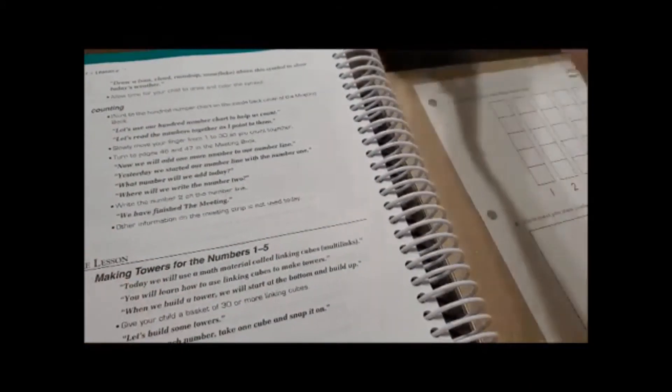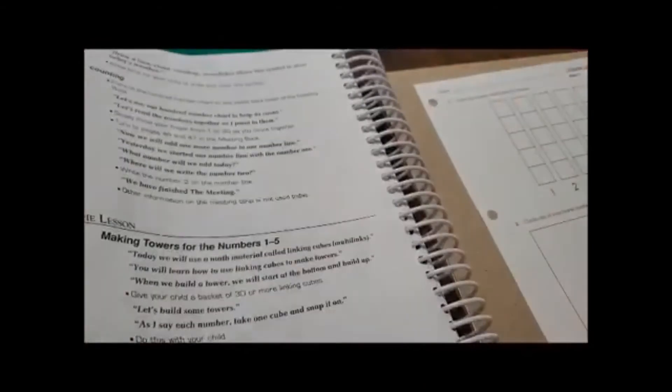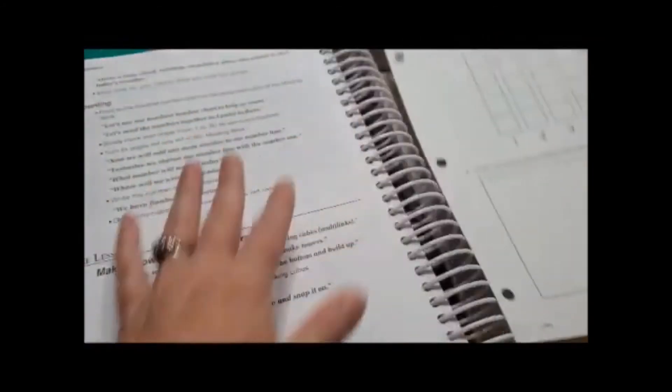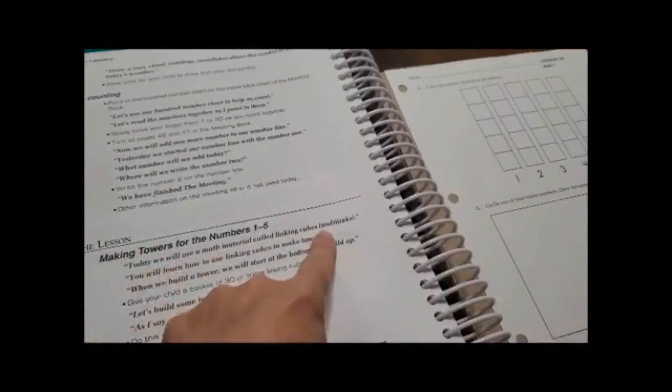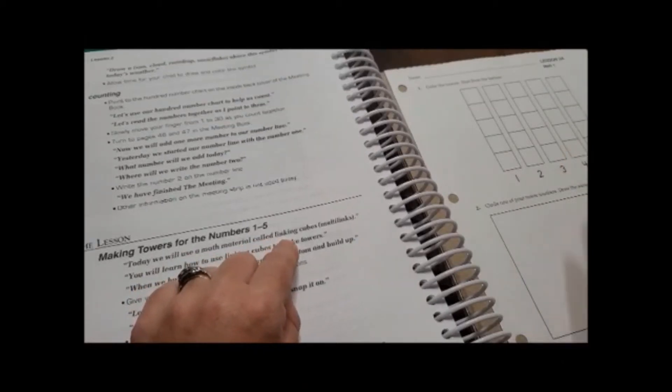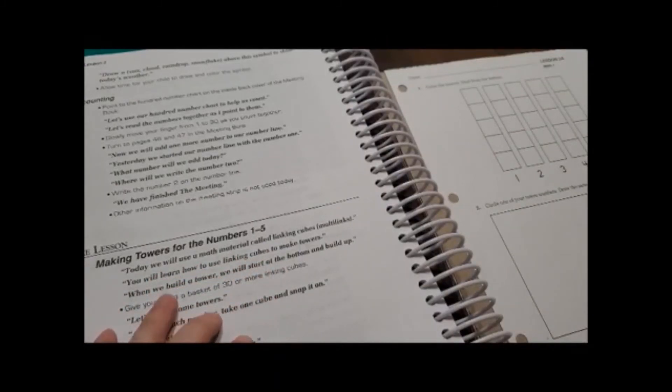And now it tells us that we're going to move on to our lesson. And if we looked up here at our materials, it says that we need our linking cubes, unsnapped at least thirty, some crayons, and our workbook sheet one dash two. Today we will use a manipulative called linking cubes. These are our linking cubes. You will learn how to use linking cubes to make a tower. When we build a tower, we will start at the bottom and build up. Now let's build some towers. As I say each number, take one cube and snap it on.